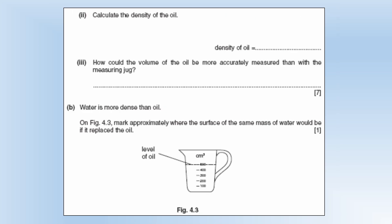Calculate the density of the oil so we can see from the jug what the volume is so we're going to divide the mass by the volume that we can see on the jug and that's going to give us a density in grams per centimeter cubed 0.82.